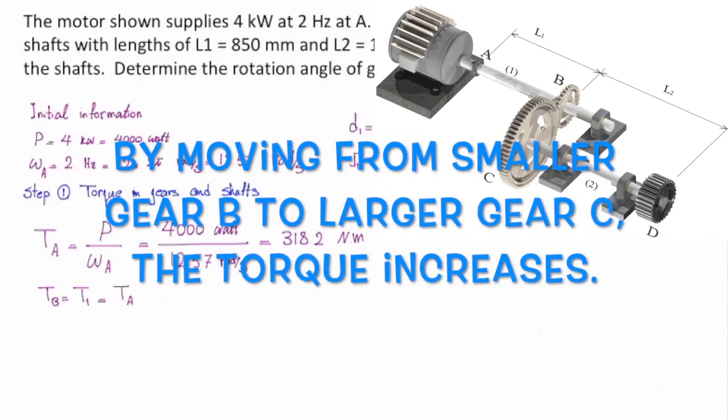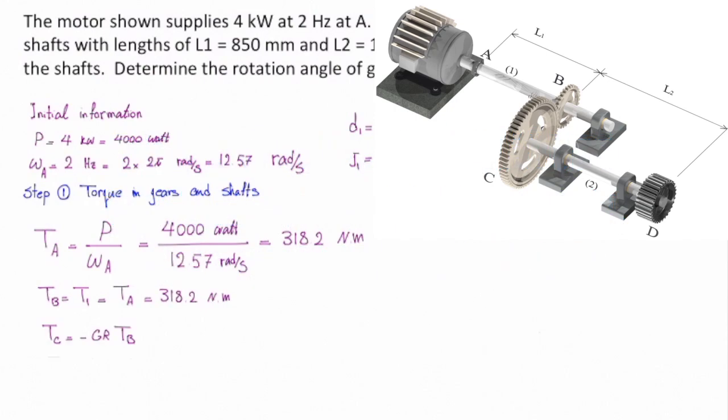How much would be the torque at gear at C? I have to use the gear ratio. So, the torque increases or decreases. When we are moving from smaller gear at B to larger gear at A, the torque increases. So, the gear ratio that I have to use in this equation is 54 divided by 36. And that gives me negative 477.3 Nm. That is torque at C. How much would be torque at D? Or shaft 2? That would be the same. I am moving along a shaft. We have determined torque in these two shafts. Shaft 1 and shaft 2.